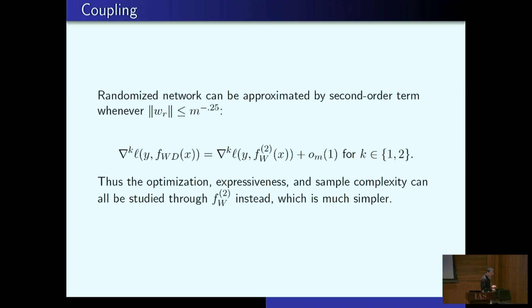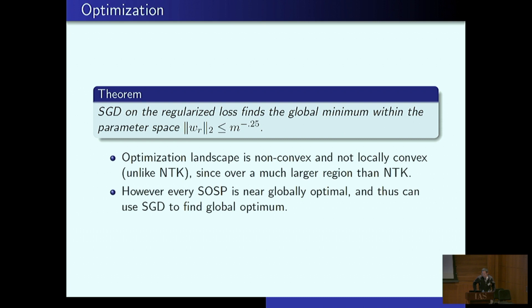Okay, so for optimization, what can we show? So what we can show is on that regularized loss, you find the global minimum within a parameter space region of this m to the minus one quarter, and SGD can find a global min. The optimization landscape is not convex, and unlike NTK, it's not locally convex anymore. There is non-convexity since you're over a much larger set, and it's non-linear. However, every second order stationary point is good, and you can use SGD to find global optimum here.